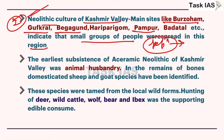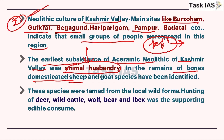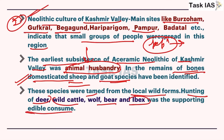The earliest subsistence of the Aceramic Neolithic of Kashmir Valley was animal husbandry - the major dominant economic activity here is animal husbandry, not agriculture, because the geographical conditions present in Vindhya region are not present in Kashmir Valley. Remains of bones of domesticated sheep and goat species were found in excavations, showing these animals were used in plenty - they were tamed from local wild herds. Hunting of deer, wild cattle, bear, and ibex were also supplementary food sources. You can relate these animals with geography - ibex, bear, and wolf were present mainly in the Himalayas.